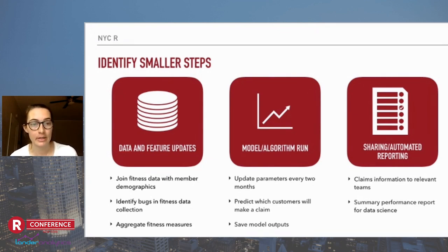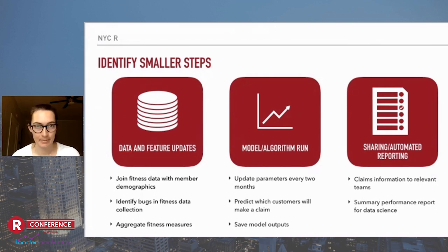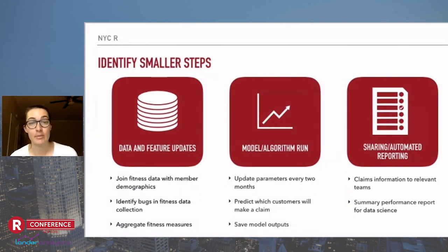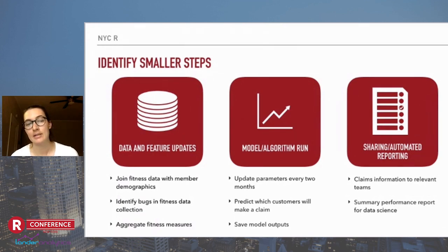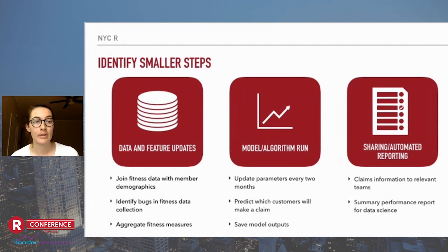The second bucket is code used to develop the model or run whatever algorithm you're using. In our use case, if we want to refit and update model parameters every two months, that code goes here. Predicting which customers will make a claim goes here too, as well as saving model outputs. The final bucket is some sort of sharing or automated reporting. Not every project will have this — sometimes you just make predictions and save them internally. But in our case, relevant teams want to know about the variables most related to claim probability, as well as a summary performance report for the data science team.